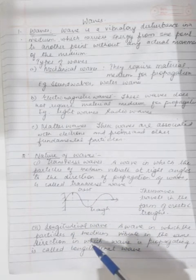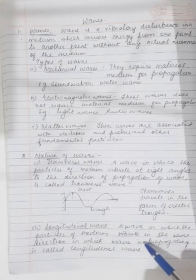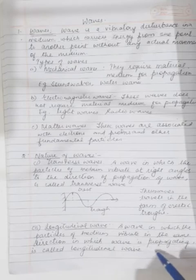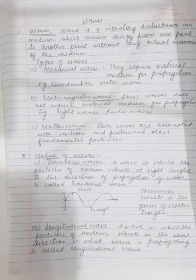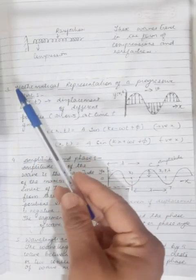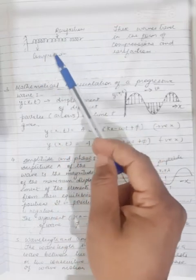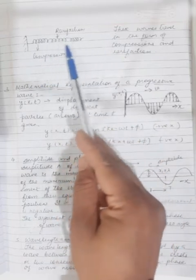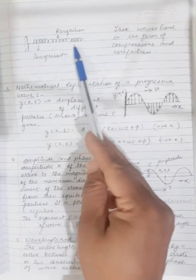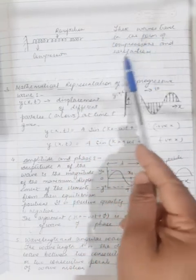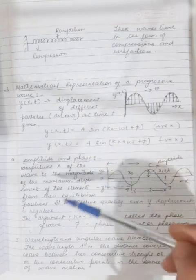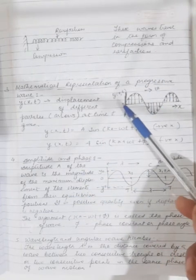Next, longitudinal waves — a wave in which the particles of the medium vibrate in the same direction in which the wave is propagating is called a longitudinal wave. You can see the compression and rarefaction in a spring. These waves travel in the form of compressions and rarefactions.